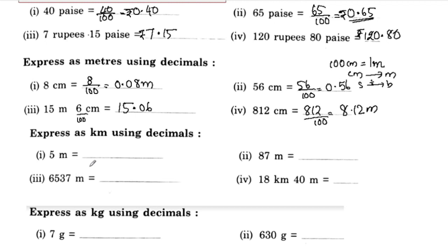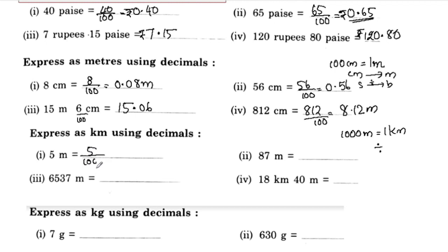Express as kilometers using decimals. Meter to kilometer: 1000 meters is 1 kilometer. Meter is smaller, so this is a division. 5 meters is 5 by 1000. If you look at the decimal point, it is 3 places, so this is 0.005 kilometers.